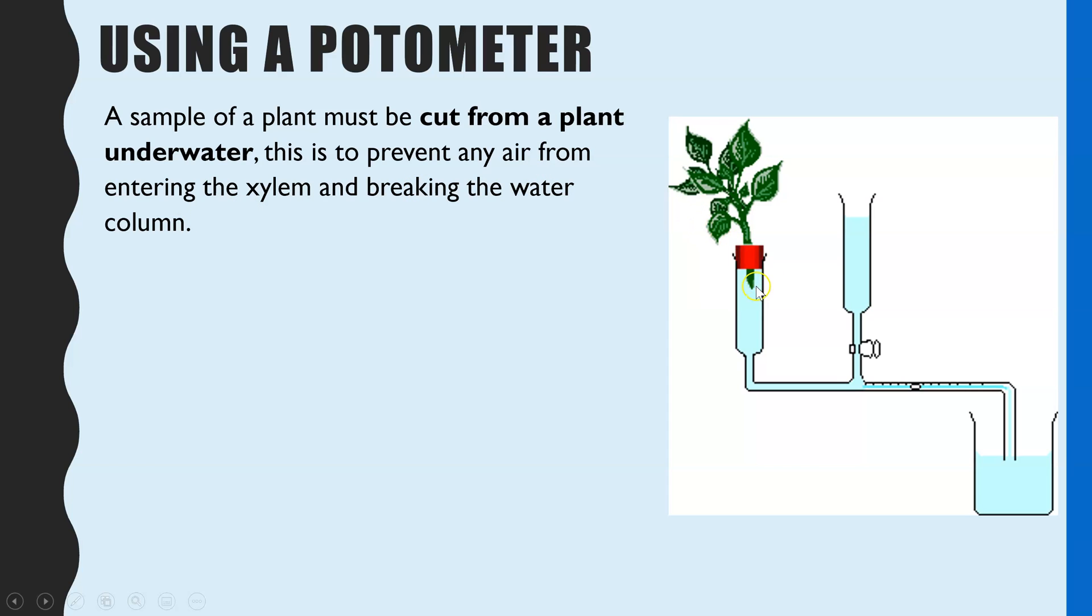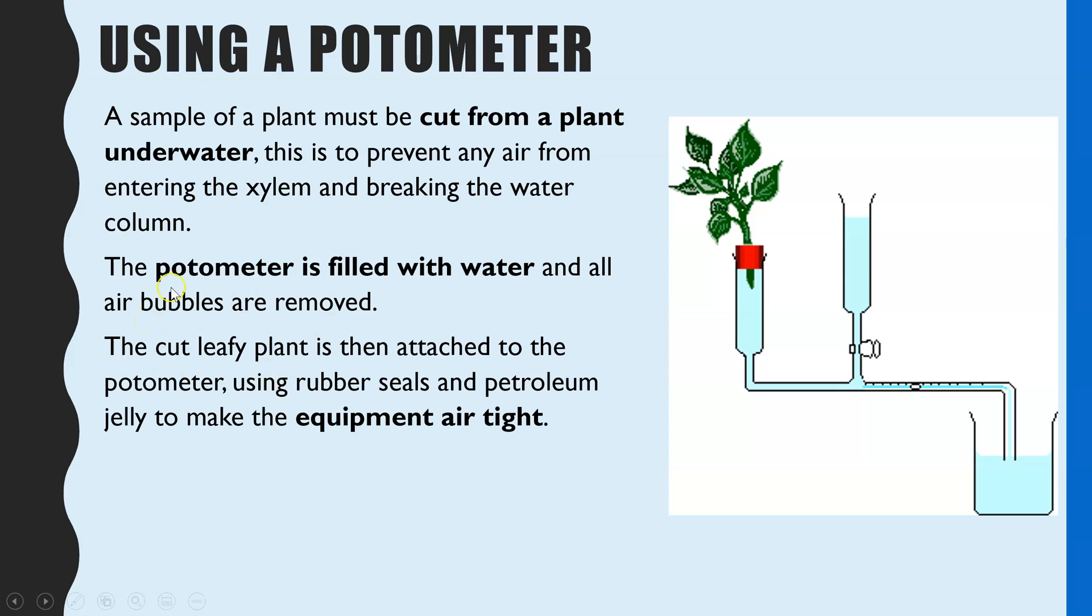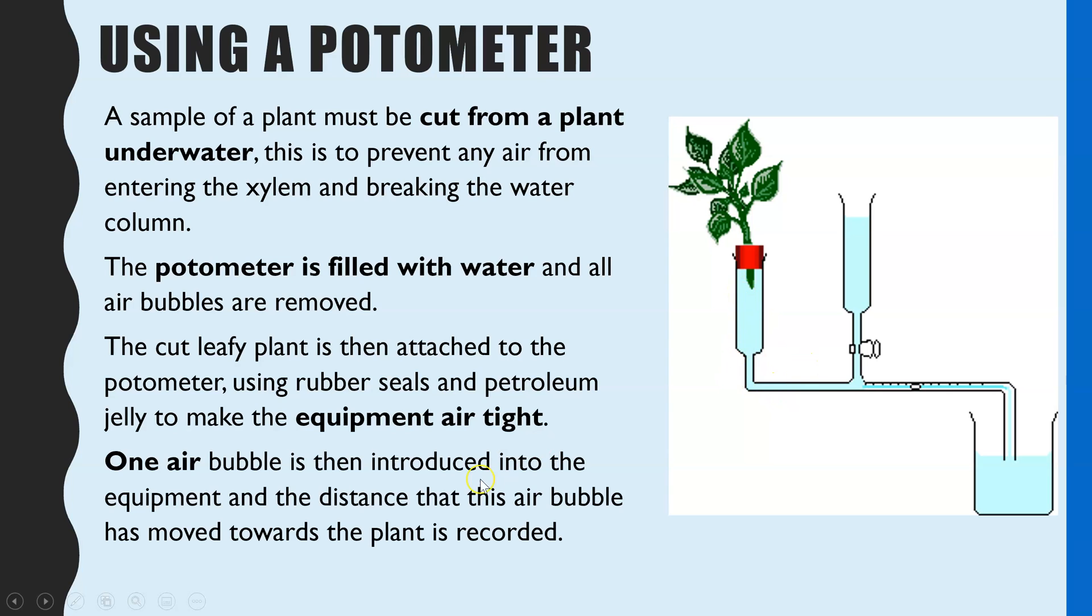So we cut it underwater to make sure only water is being drawn into the xylem. The next step is the potometer equipment all needs to be filled with water, and again this is done completely submerged in water to make sure all air bubbles are removed. We then get that leafy part of the plant put into the potometer through a rubber seal, like a rubber bung, and all of the sections where there is a joint gets covered in petroleum jelly to make the equipment completely airtight. That's to make sure no air bubbles can get in, which would prevent the flow of water, but also to make sure no water can leak out and therefore affect the accuracy of the measure of the uptake of water.